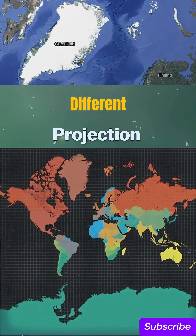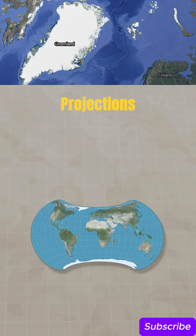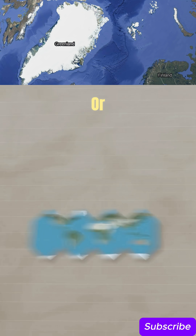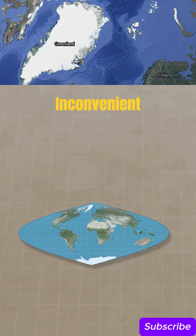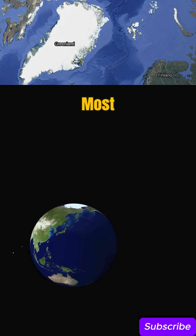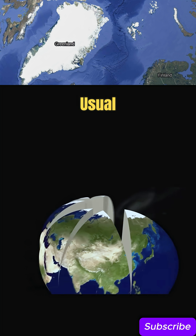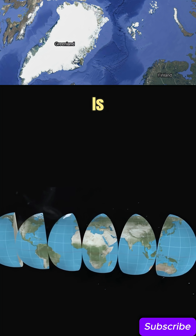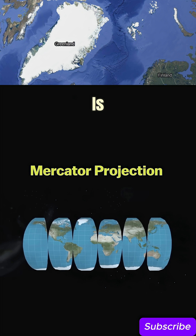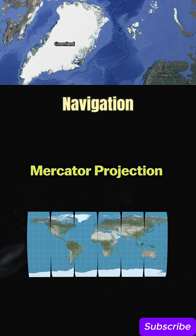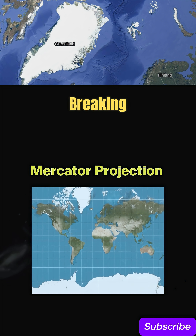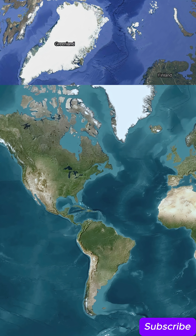There are many different types of projections, each of which distorts the surface or is very inconvenient to use. That is why the most optimal and usual option for us is called the Mercator projection. It is convenient for navigation and perception, allowing you to keep the shape but breaking proportions.